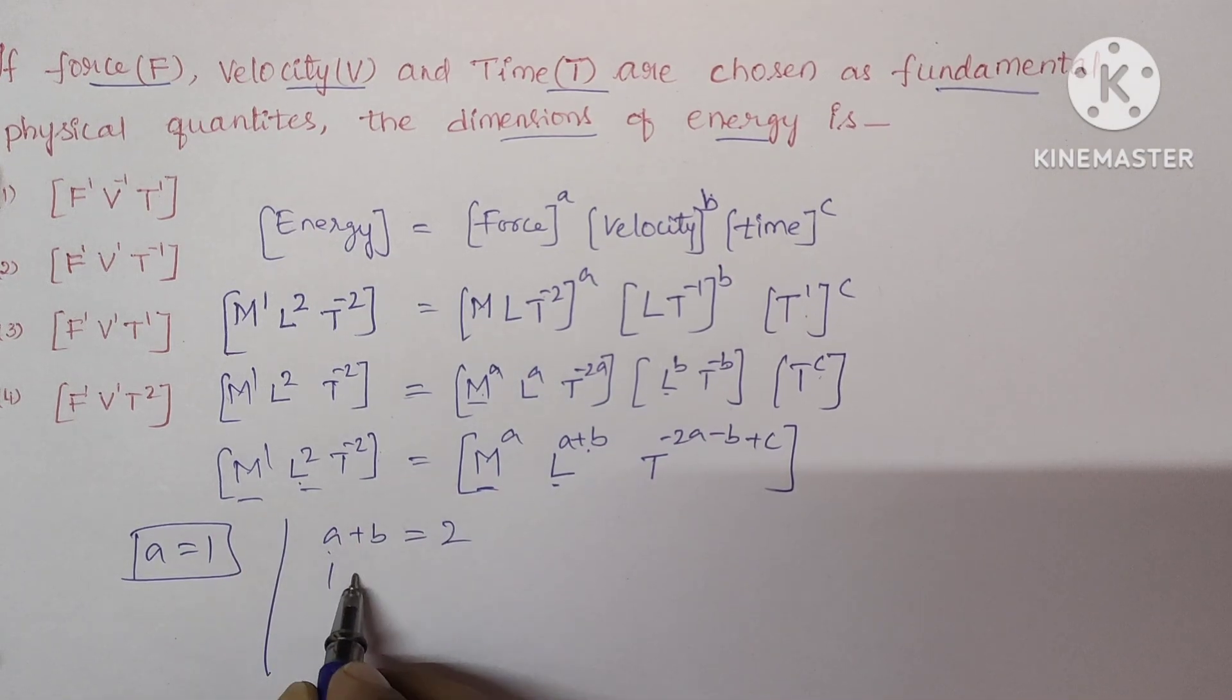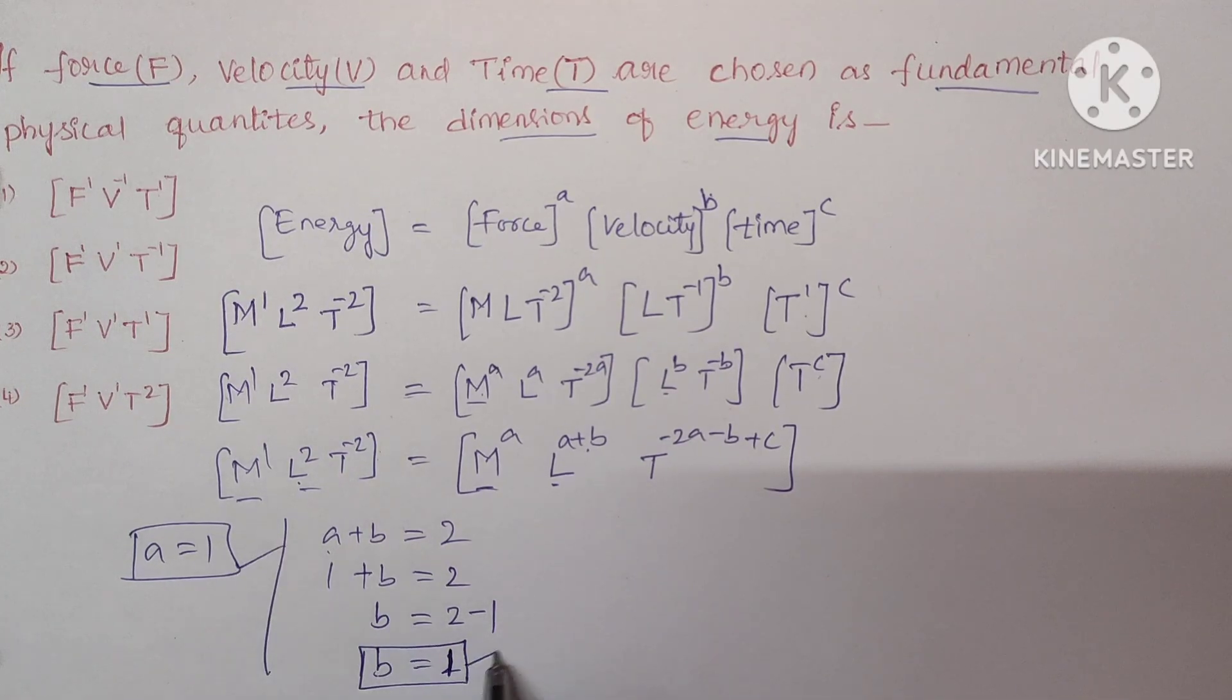So A plus B equal to here it is 2. Substitute the value of A here, 1 plus B equal to 2. So B equal to 2 minus 1. So B equal to, sorry, its value is 1. So we got A and B values.